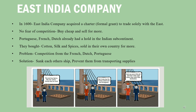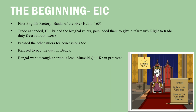But the charter could only stop British trading companies. The Portuguese, Dutch, and French already had a hold in India, so competition was back. They all bought cotton, silk, and spices at low rates and sold them for more in Britain. The solution to this competition was that they blocked each other's routes and prevented ships from sailing, which obviously led to conflict.